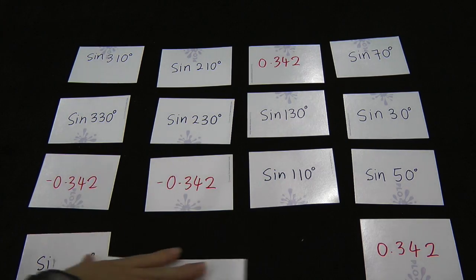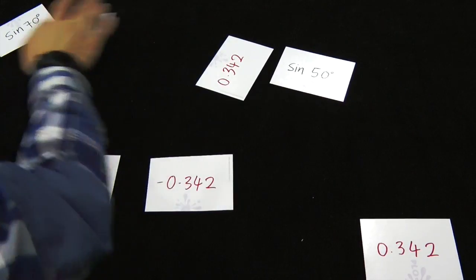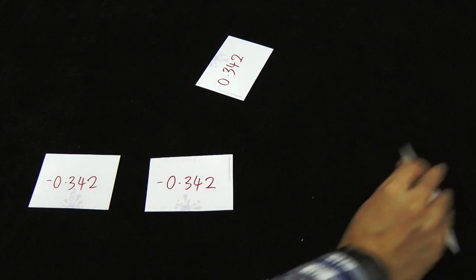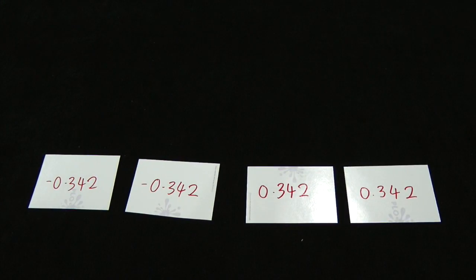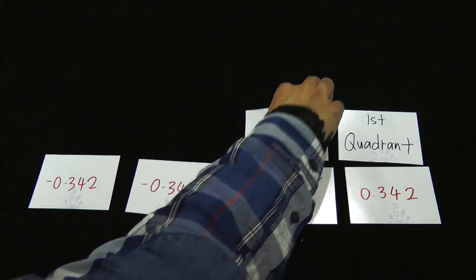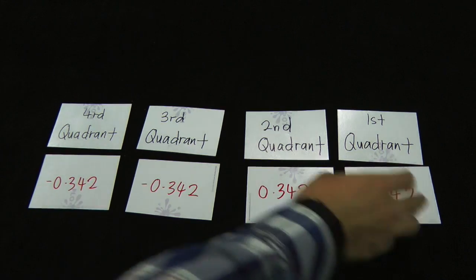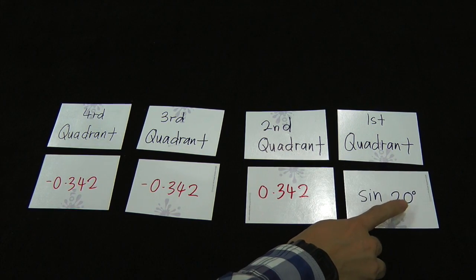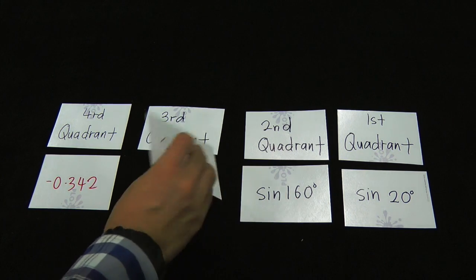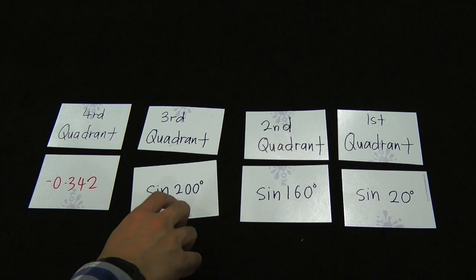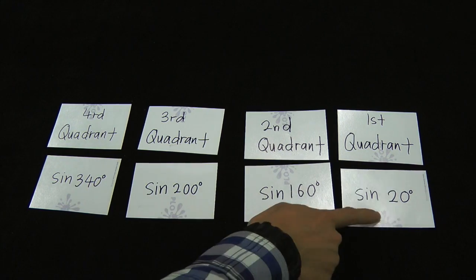Let me explain how this actually works. Let me take out the relevant cards — this is the first quadrant, this is the second quadrant, third quadrant, and fourth quadrant. The first quadrant is simple: the angle is between 0 to 90. Second quadrant: 90 to 180. Third quadrant: 180 to 270. And the last quadrant: 270 to 360. So each card is correctly placed in its quadrant.